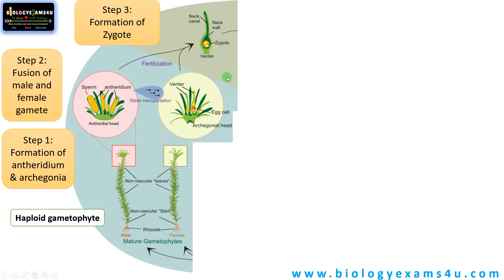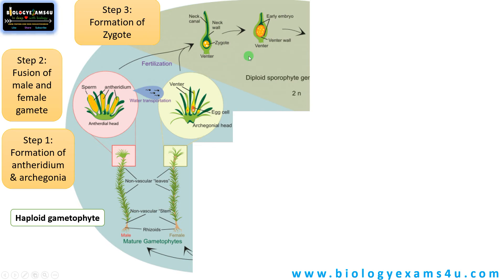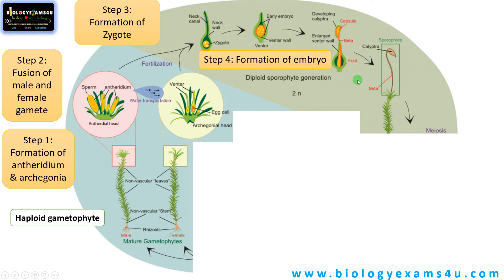The gametophytic phase is now over. The zygote divides and later forms an embryo — a multicellular embryo — and later it forms the sporophyte. Step four is the formation of the embryo. Step five is the formation of the sporophyte. The sporophyte is made up of three regions: a foot, a seta, and a capsule.